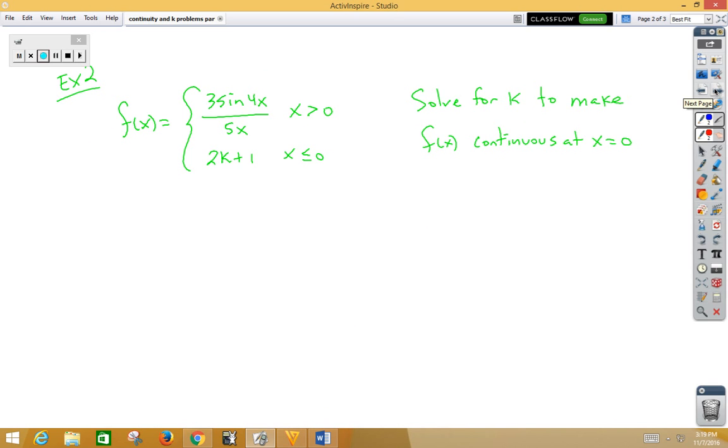Let's try another example. This time, solve for k to make f of x continuous at x is 0. That's the key word, continuous. That means the two-sided limit has to exist. That means the right-side limit and the left-side limit have to be the same.